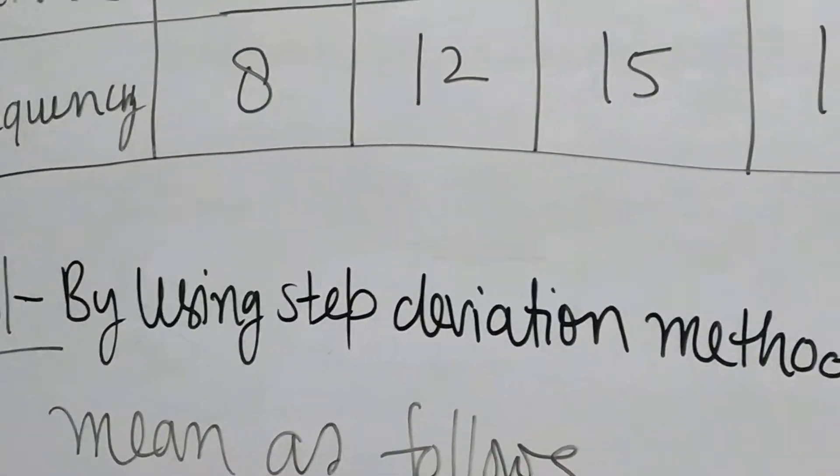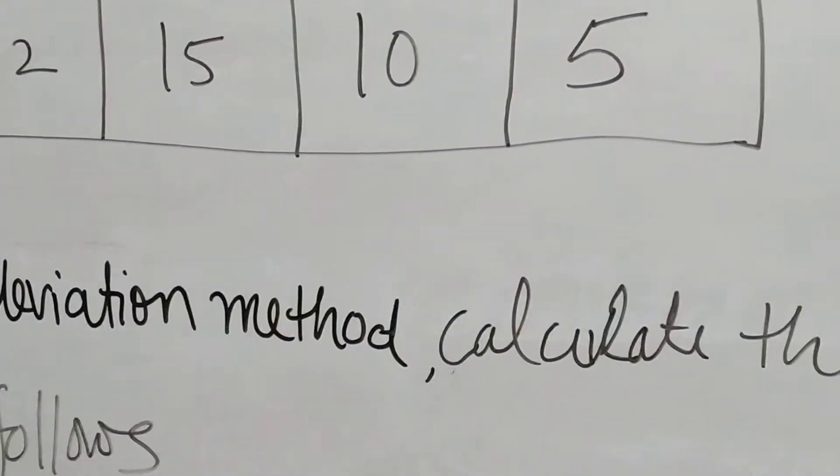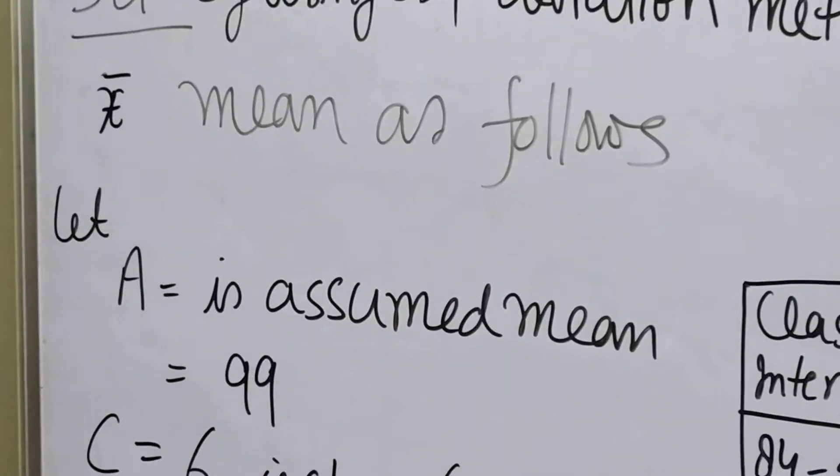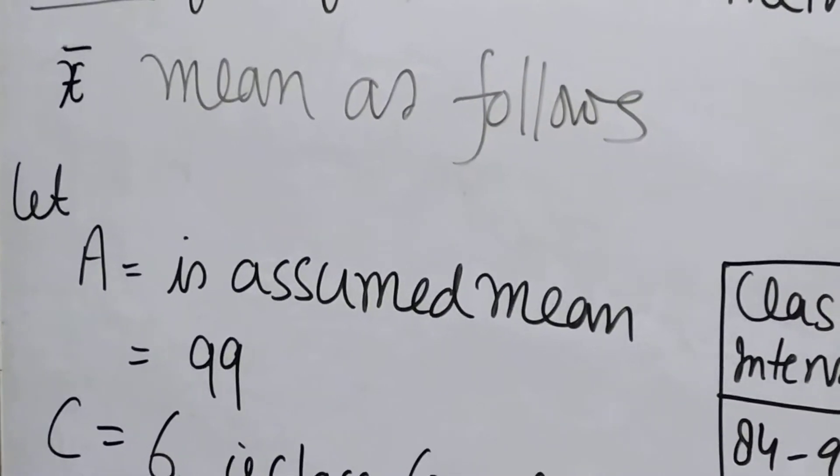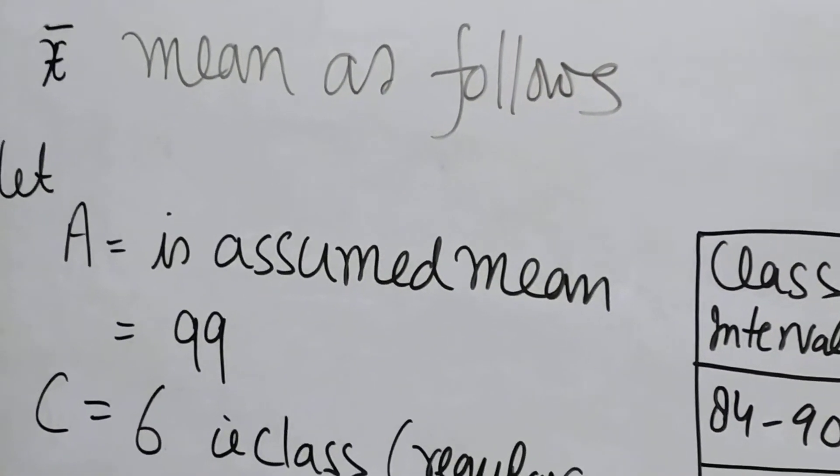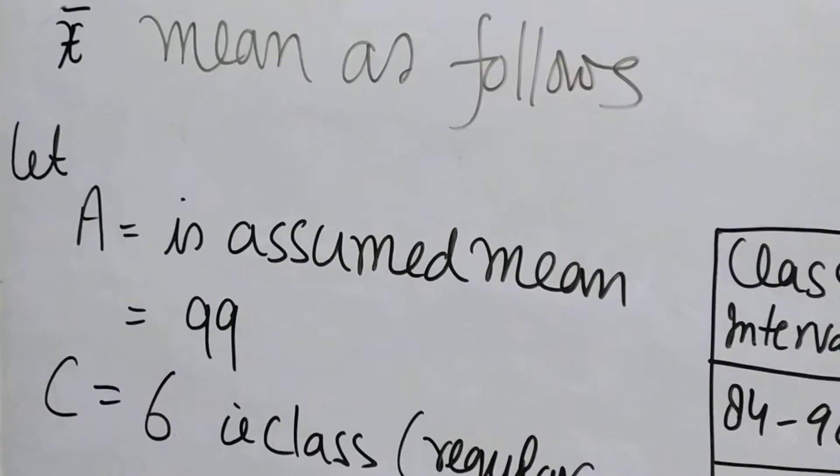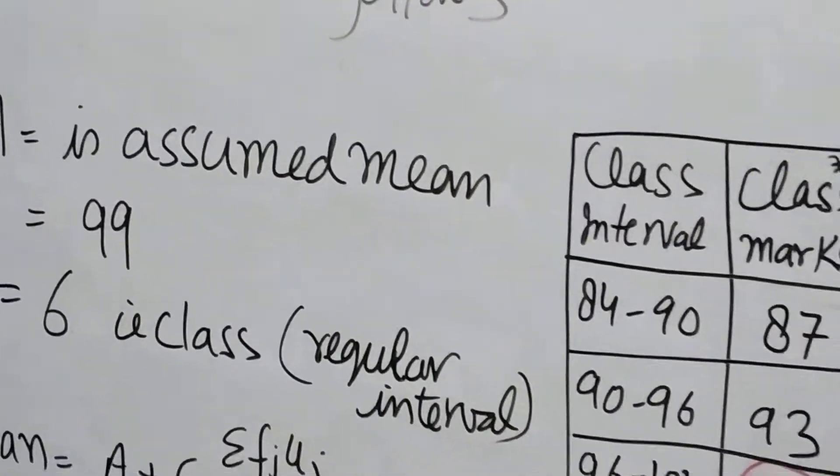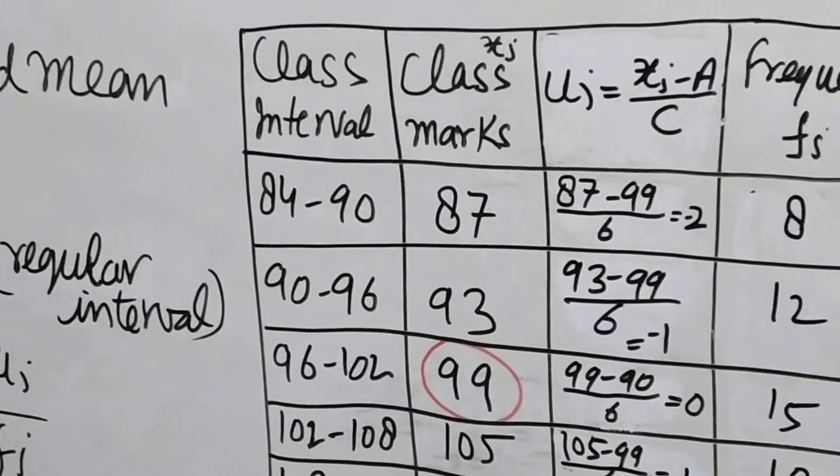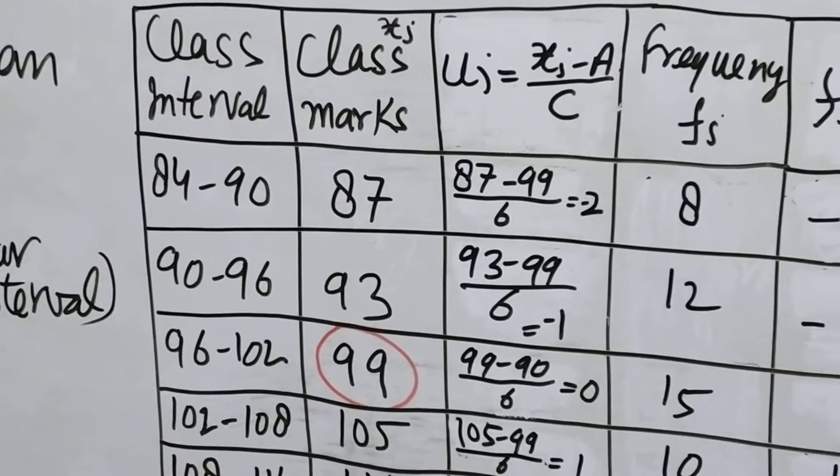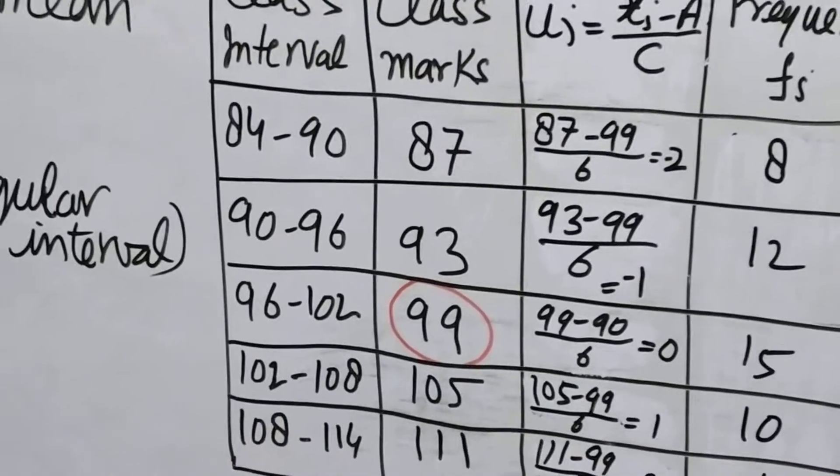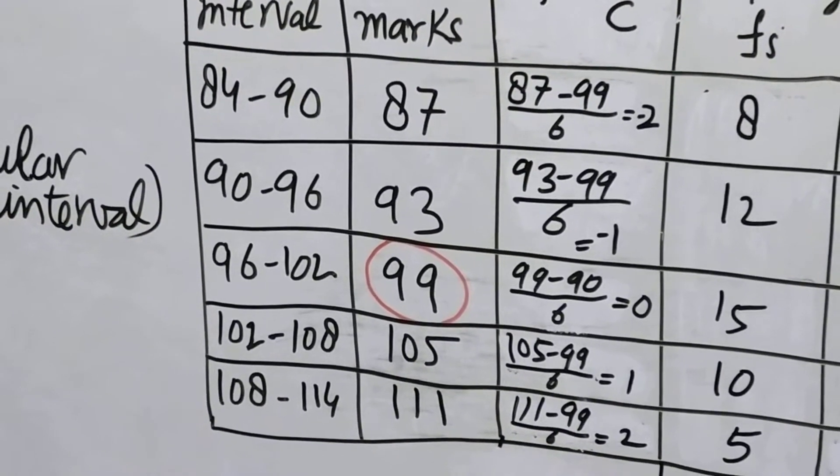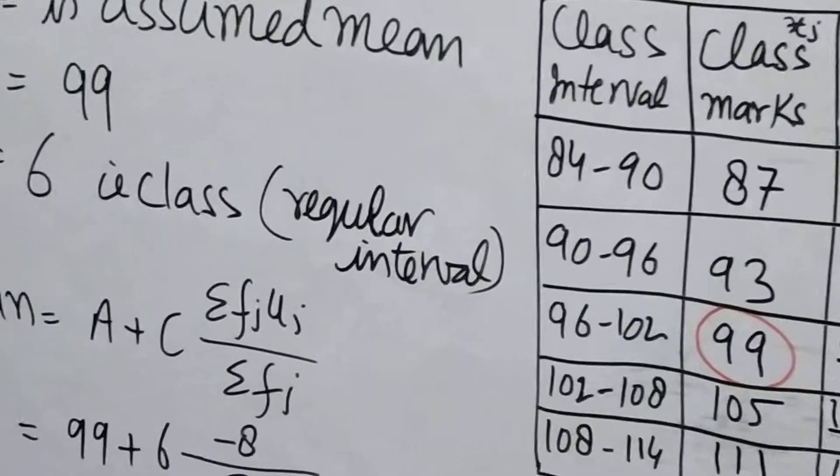By using step deviation method, we will calculate the mean as follows. X̄ has been taken as the mean and A is the assumed mean as it was taken in the previous question. It is the same, 99. C is 6, that is the class regular interval. This difference: 84 to 90, 90 to 96, 96 to 102, 102 to 108, and 108 to 114.